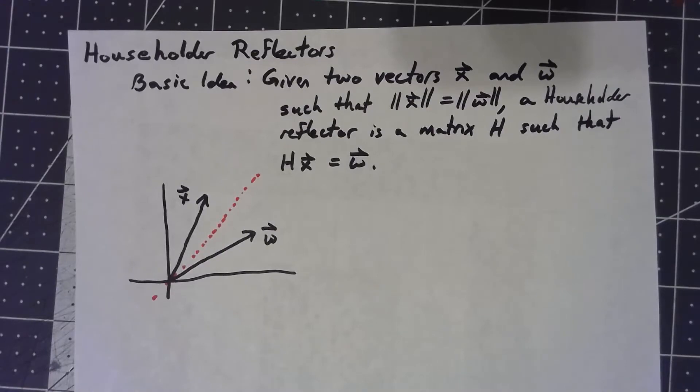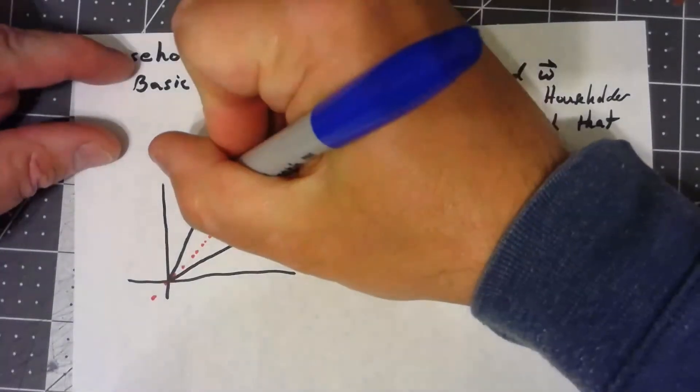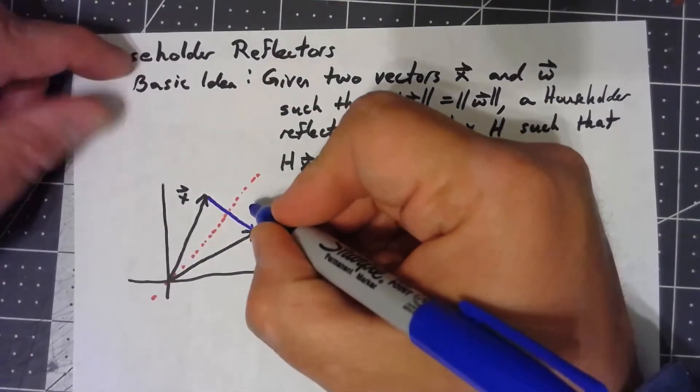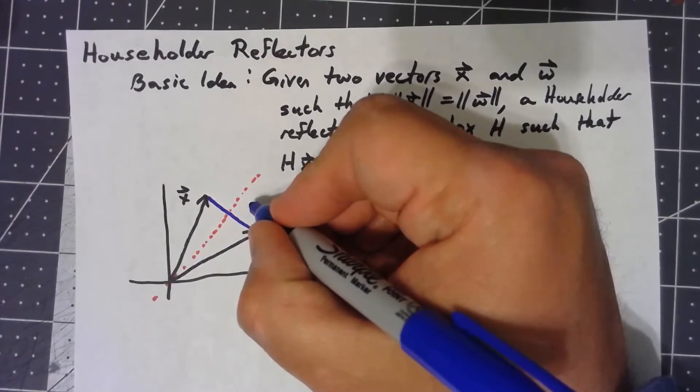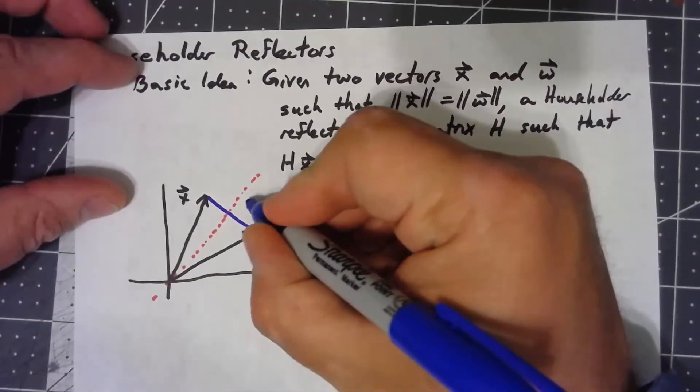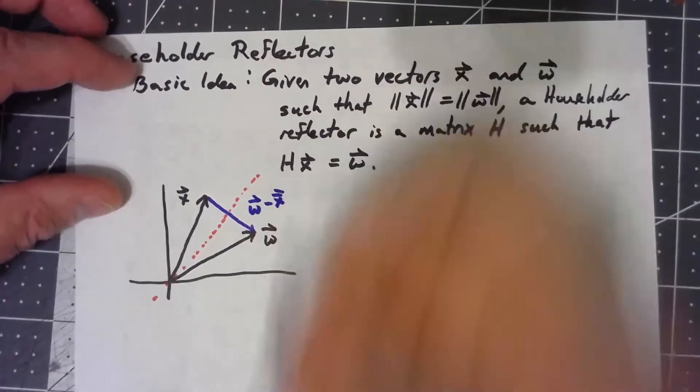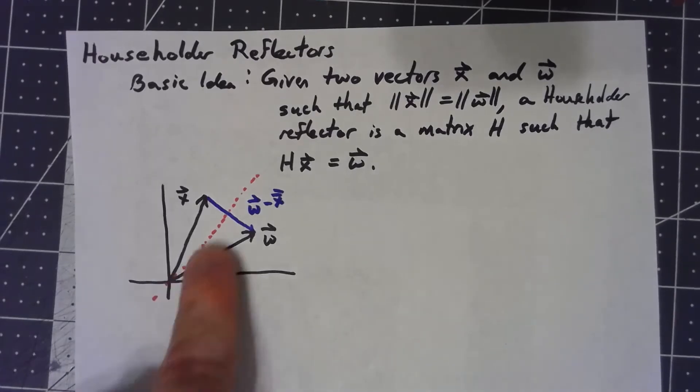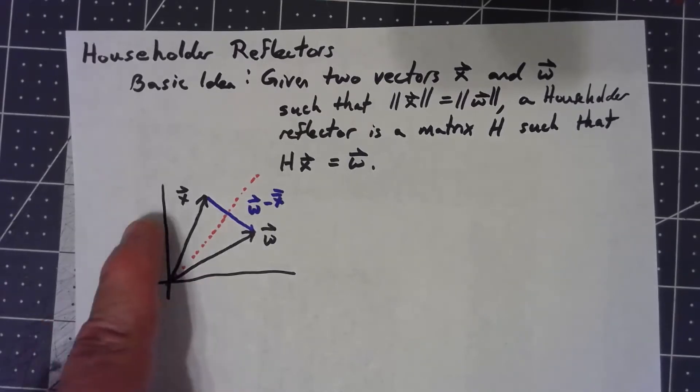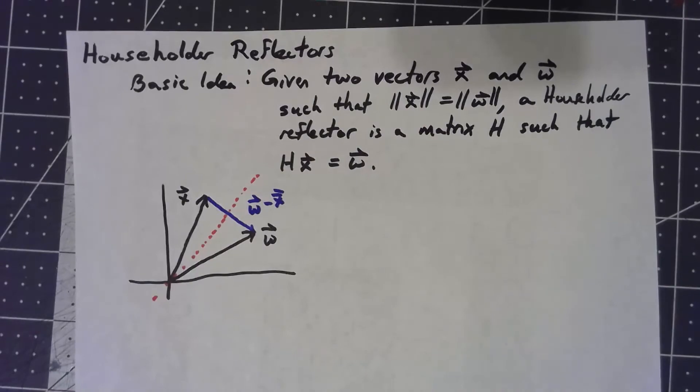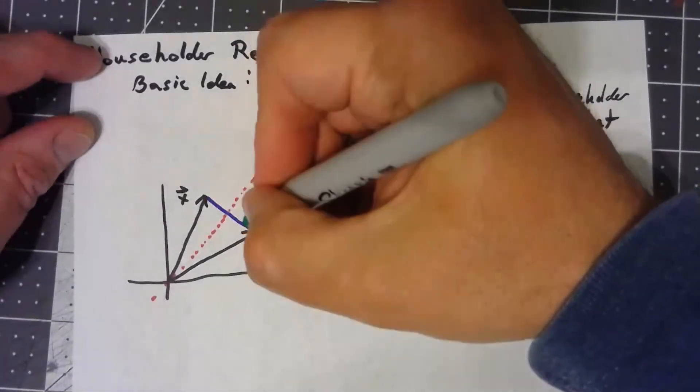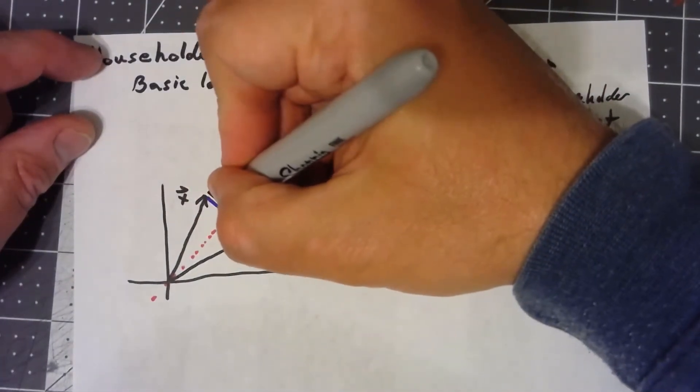Well the first thing is to notice that if I go and draw a vector like that, that's going to be the vector w minus x. And because of the way this thing is, if I were to project x onto that w minus x vector, which we'll actually go ahead and call this thing v for simplicity, I'm not going to get this full thing, but I am going to get a vector like this.